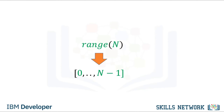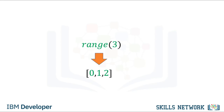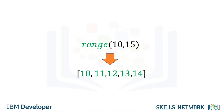Before we talk about loops, let's go over the range function. The range function outputs an ordered sequence as a list. If the input is a positive integer, the output is a sequence that contains the same number of elements as the input but starts at zero. For example, if the input is 3, the output is the sequence 0, 1, 2. If the range function has two inputs where the first is smaller than the second, the output is a sequence that starts at the first input and iterates up to but not including the second number. For inputs 10 and 15, we get the following sequence.